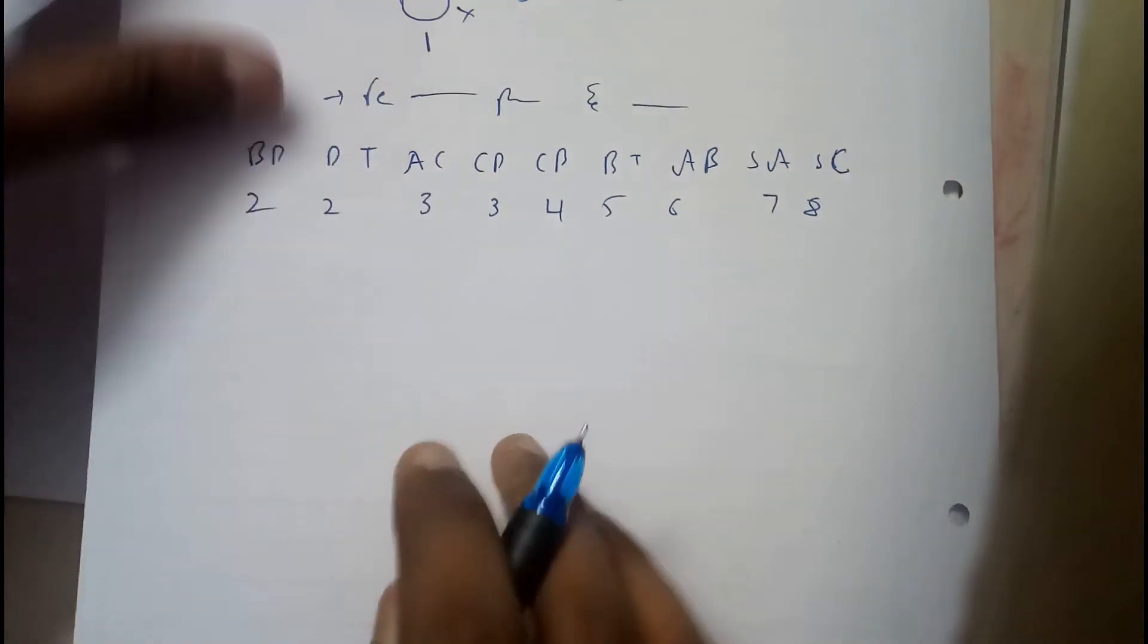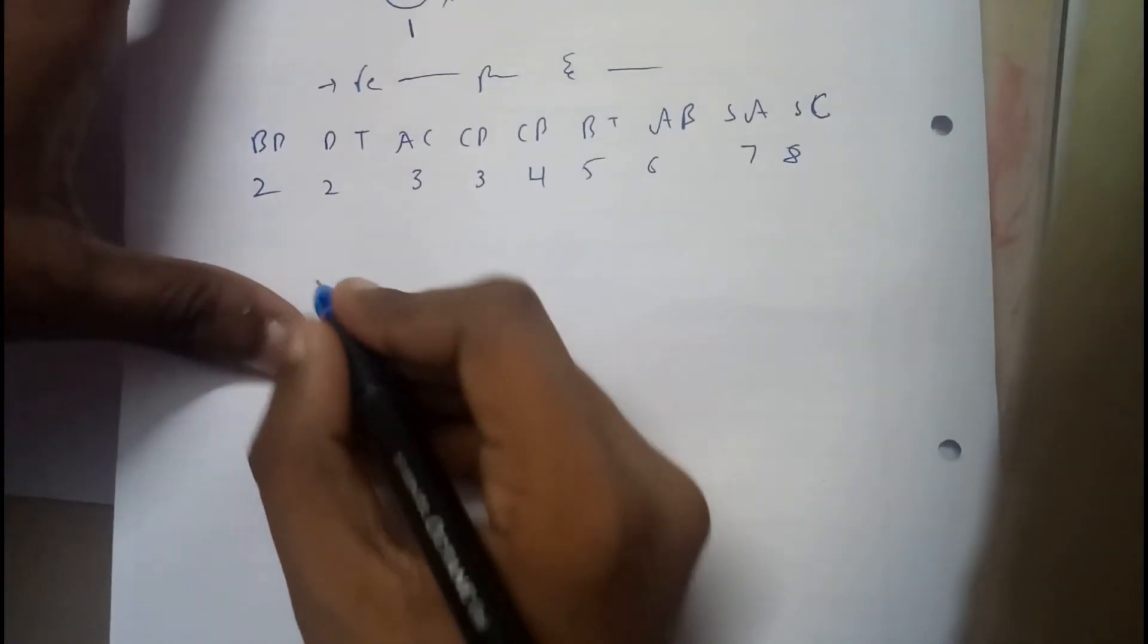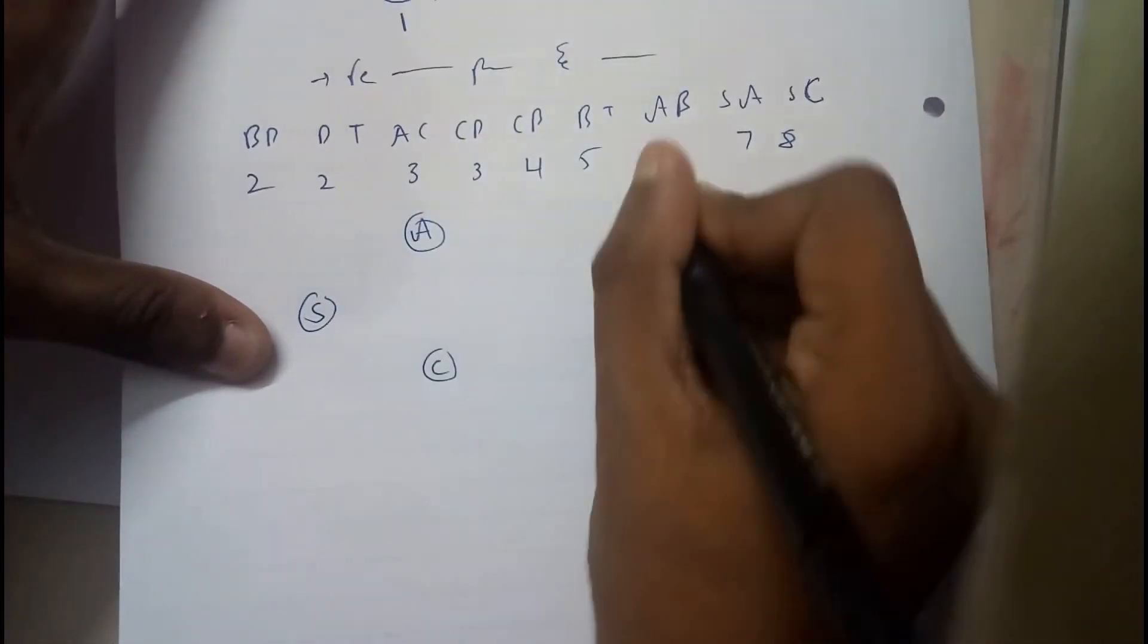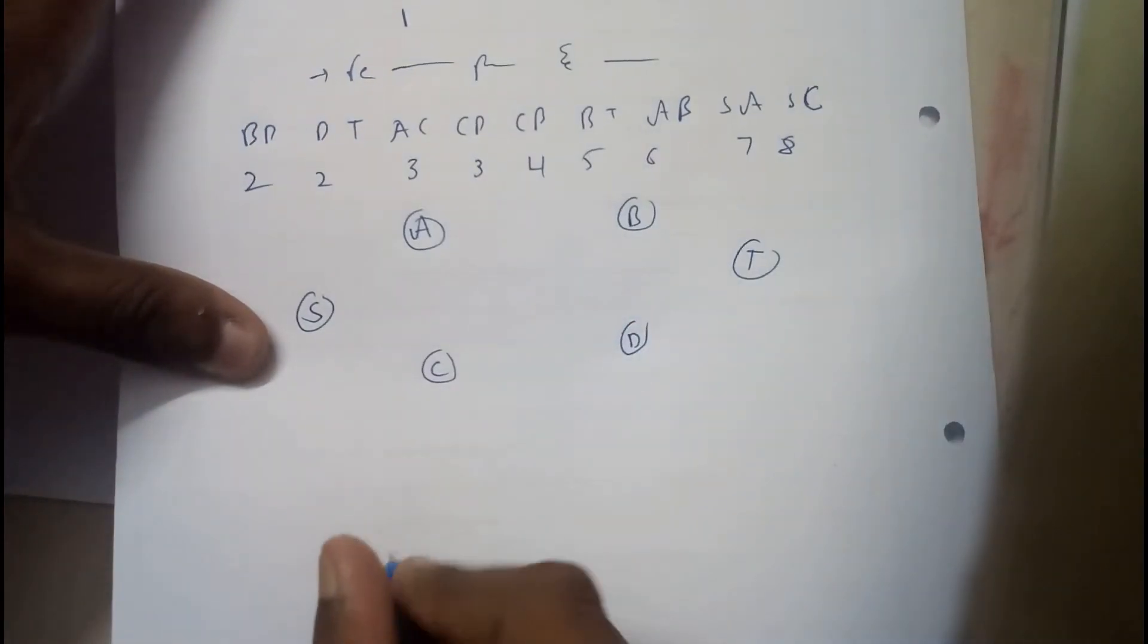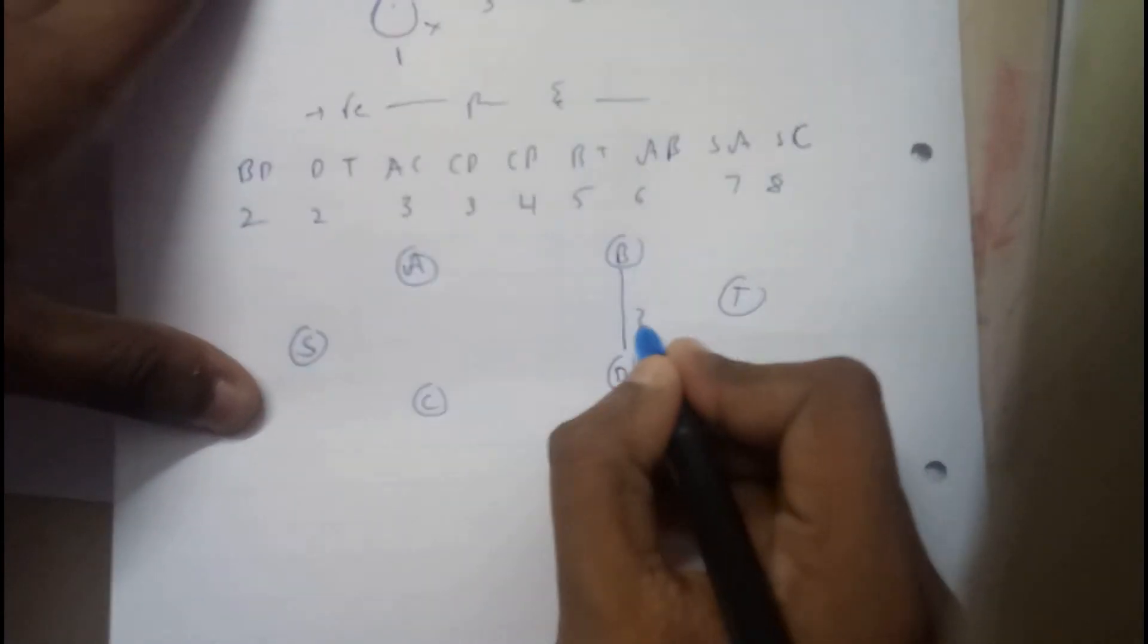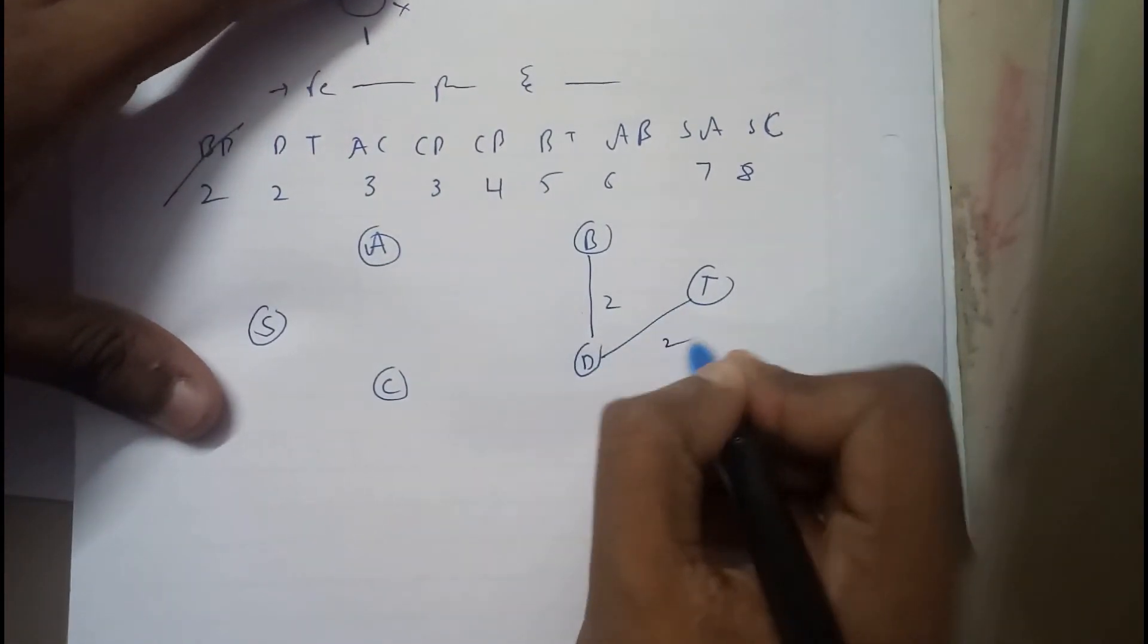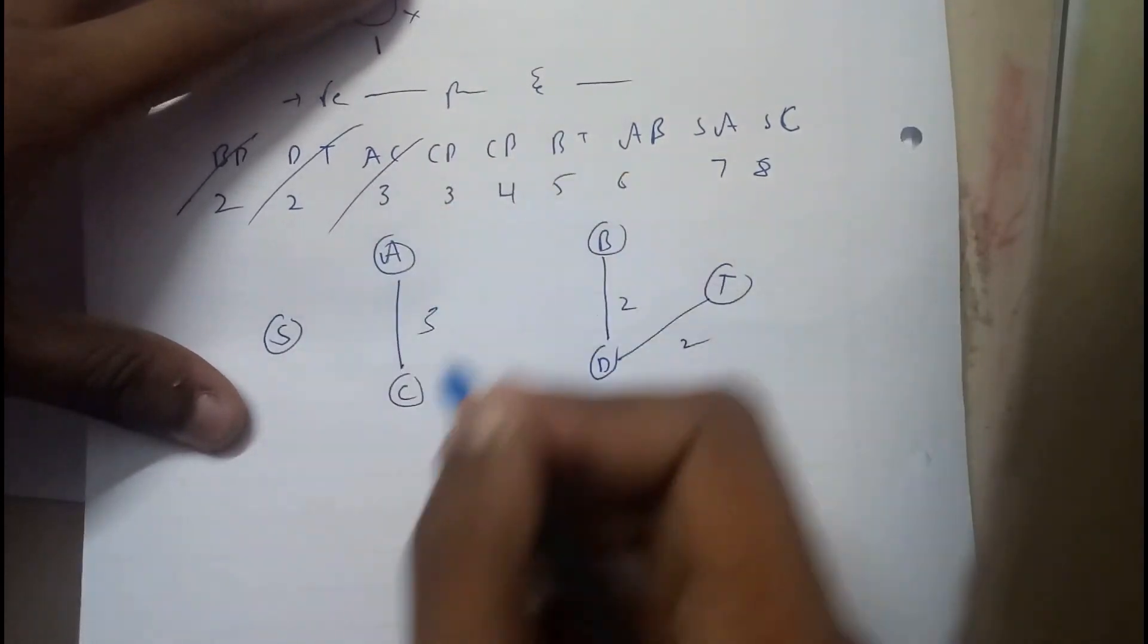And now, there is nothing else to do. Just like the previous, just write these vertices down here without any edges, as something like a null graph. C, B, D, T. Now insert one after the other into this. Initially I'll be inserting BT, 2, done. Next, DT, 2, done. AC, 3, done.